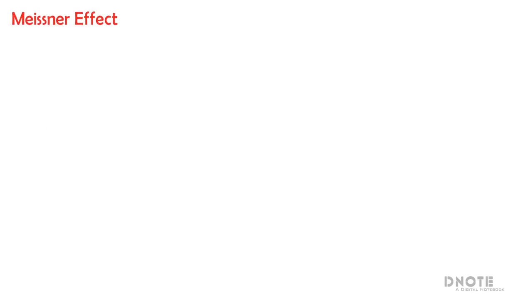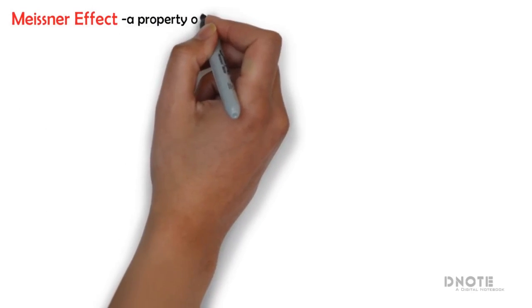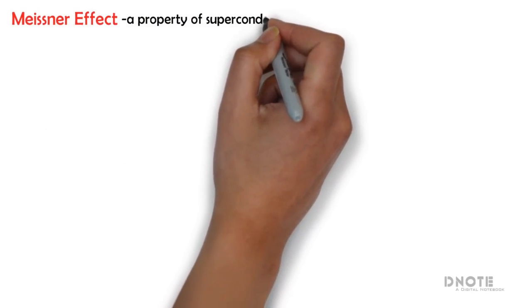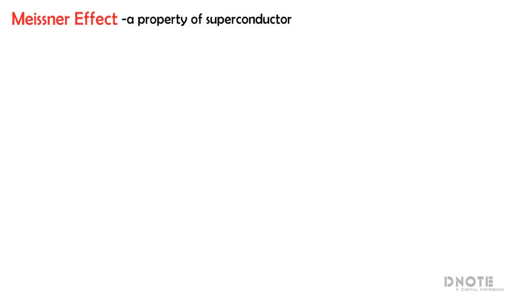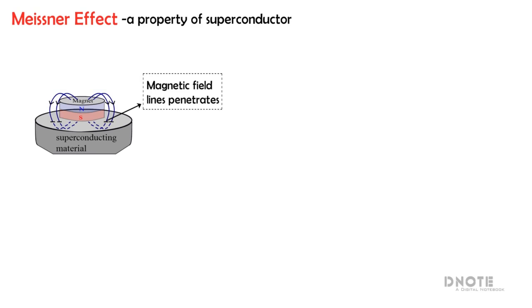The Meissner effect is the fifth property of superconductors. In order to understand this effect clearly, consider a magnet placed on a superconducting material. Of course, the magnetic field lines from the magnet penetrate the superconducting material.